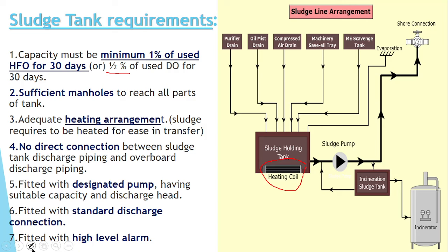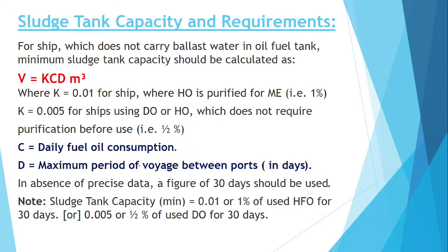So if anybody asks what are the requirements of a sludge tank capacity, you should say: 1% of HFO for 30 days, a heating arrangement, fitted with a high level alarm, a standard discharge connection, a dedicated pump, and no direct connection between the sludge discharge piping and the overboard discharge piping. In an examination, if the surveyor asks for a specific formula for sludge tank capacity, you say 1% of the fuel consumed for 30 days. But if you want to give a specific formula, you say this.